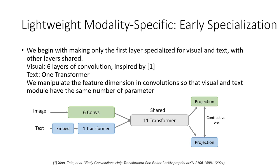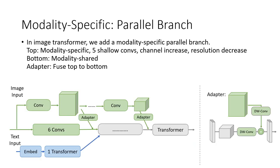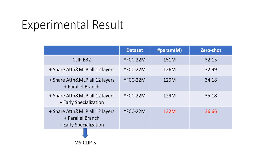For visual, we replaced the transformer with six layers of convolution, and for text, we still use a specific transformer. The motivation is that it helps to align two modalities at the beginning, providing a unified and more discriminative feature space for the following shared parts. Lastly, we found that adding a parallel branch beside the shared transformer branch — specifically five layers of shallow convolution — and fusing the output to the main shared transformer branch can provide additional performance boosts with only a few parameters. Through ablation study, MS-CLIP can outperform original CLIP with fewer parameters.